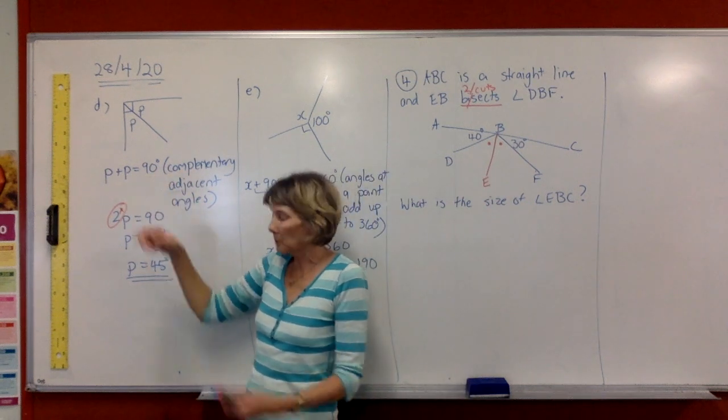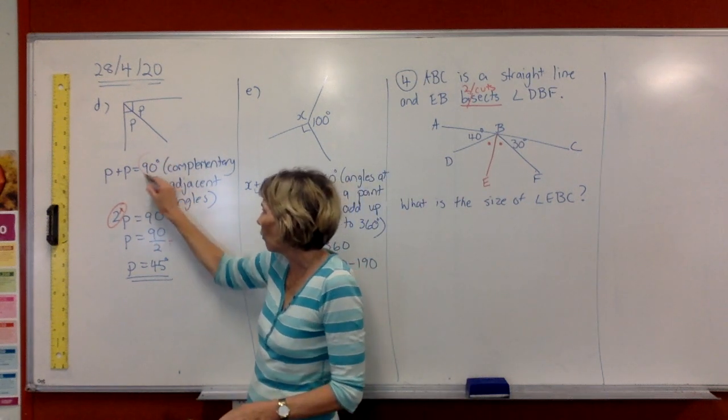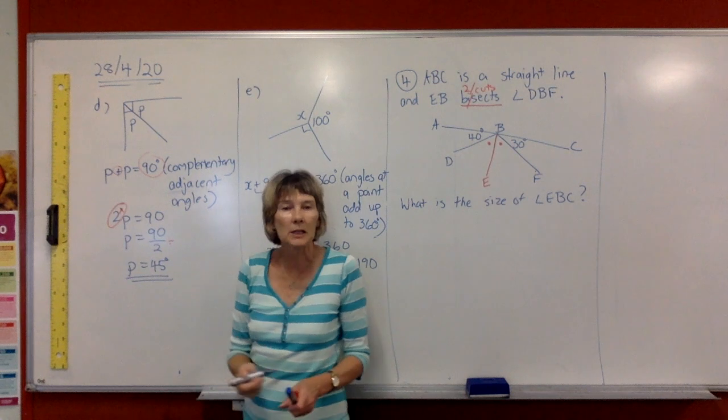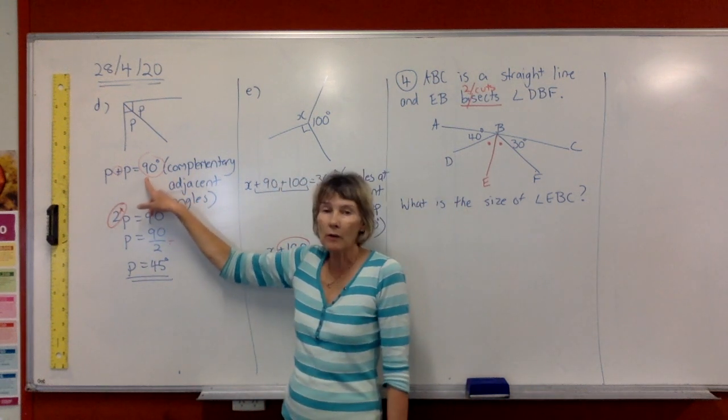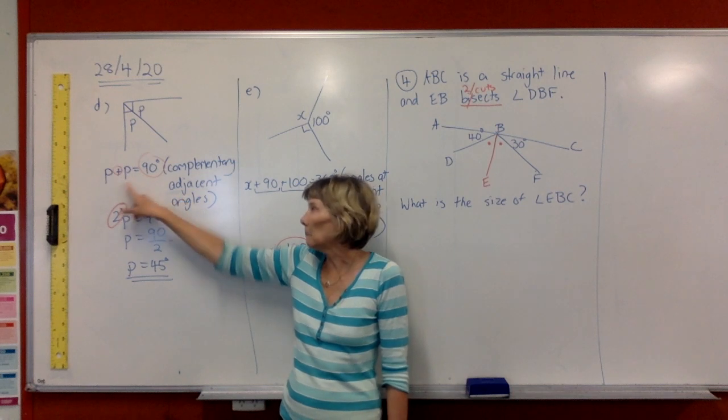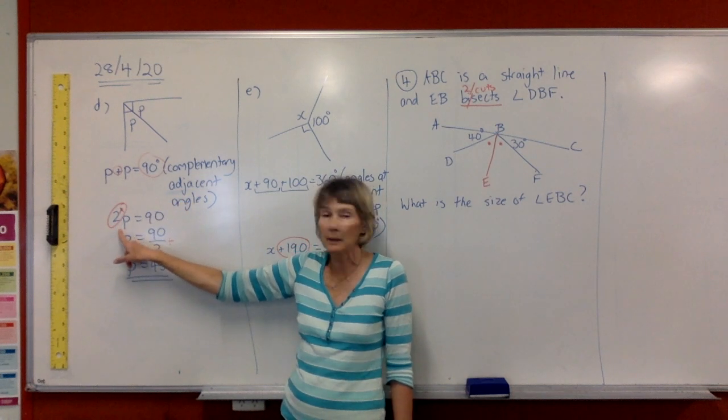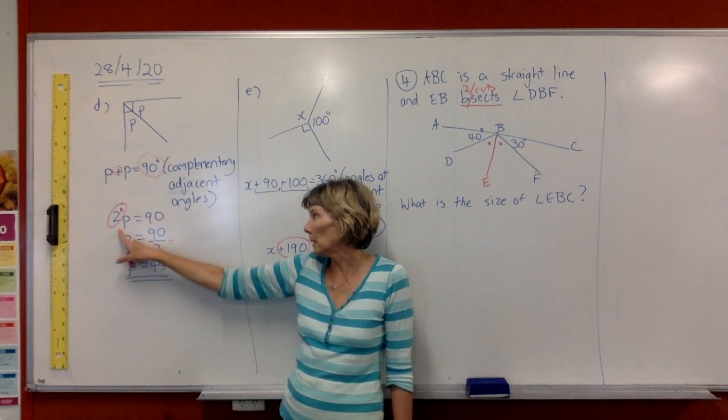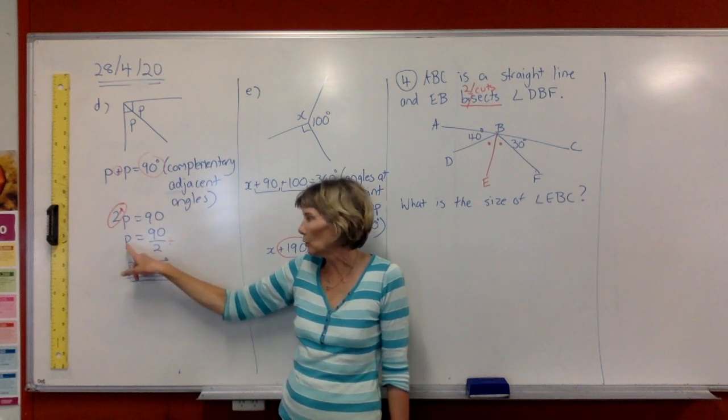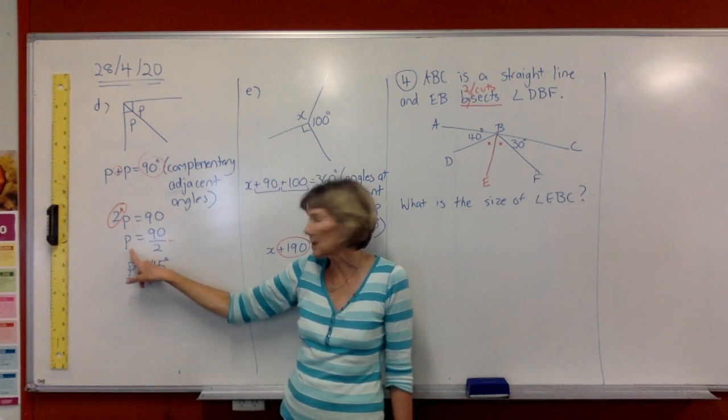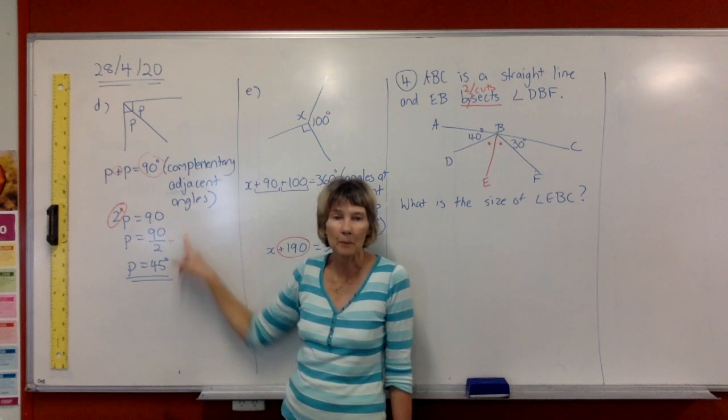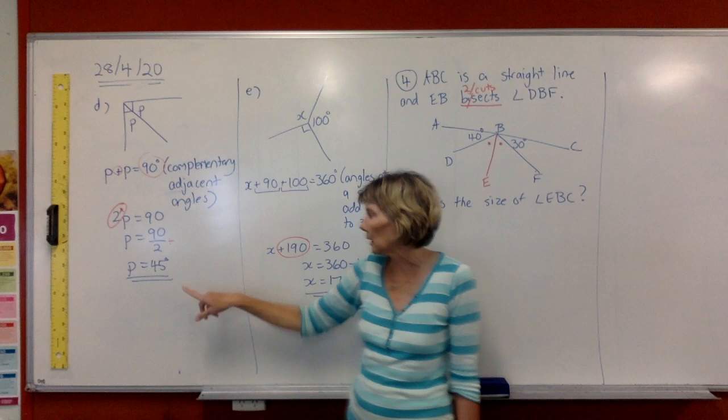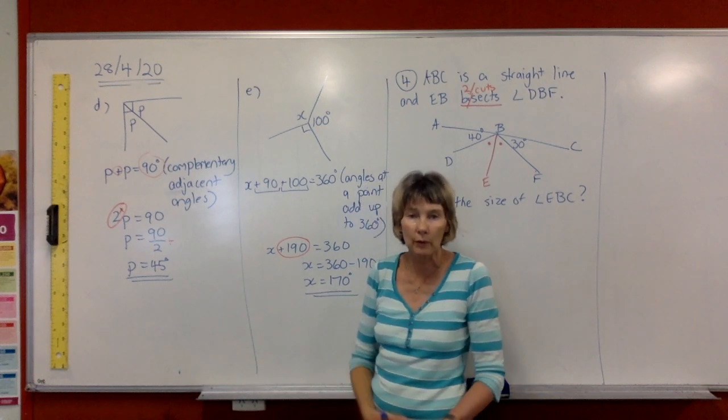After you've used your reason because you've explained to them why we added these things together to give you 90, you're then just solving an equation. So P plus P is 2P. So it's 2P equals 90. Get rid of your times 2 to get your P by itself. Come over here and do the opposite operation and divide by 2. Put that in your fraction P on your calculator, and your answer is P equals 45 degrees.